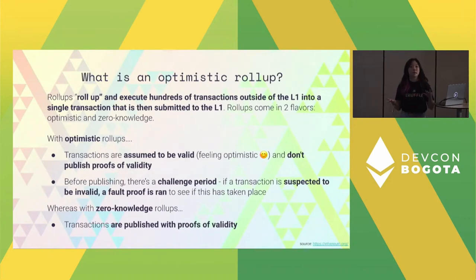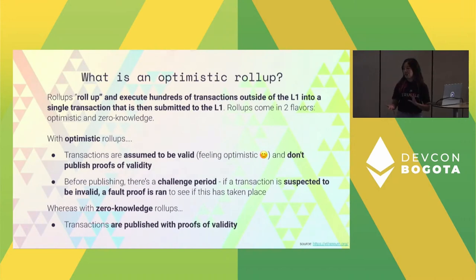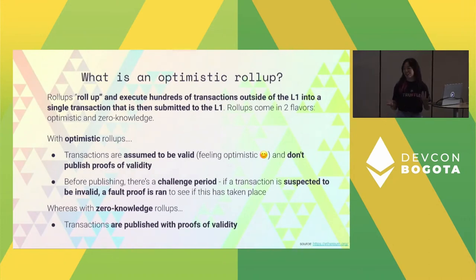What makes optimistic rollups different is they are optimistic. When we submit these transactions to Ethereum, we just assume they are valid. You might say that seems kind of bad — well, there's this thing called the challenge period. During this challenge period, anybody can come and say they think something is wrong. If they do that, they have to submit a fault proof. The fault proof either validates that it was correct and gets submitted to the chain, or confirms that something was wrong and we backtrack. The challenge period right now for mainnet is seven days, which is why people have started thinking about zero knowledge rollups, which just post a validity proof.